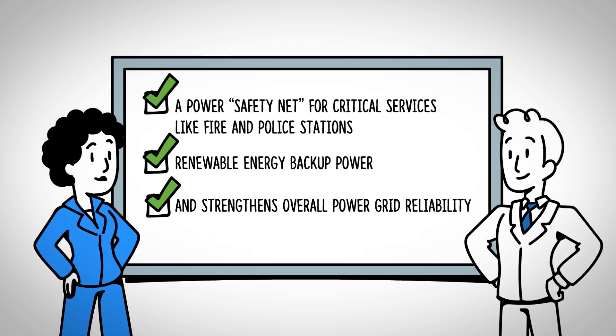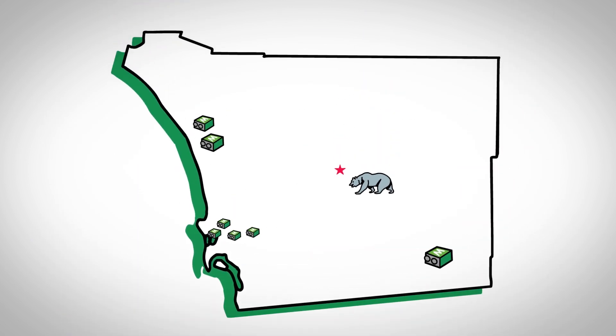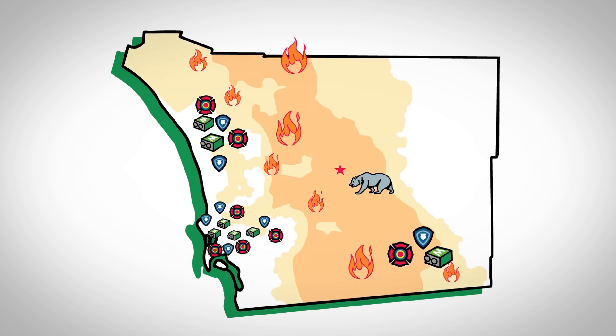SDG&E's first set of microgrid projects, pending state approval, will serve critical facilities like fire and police stations near high fire threat areas.